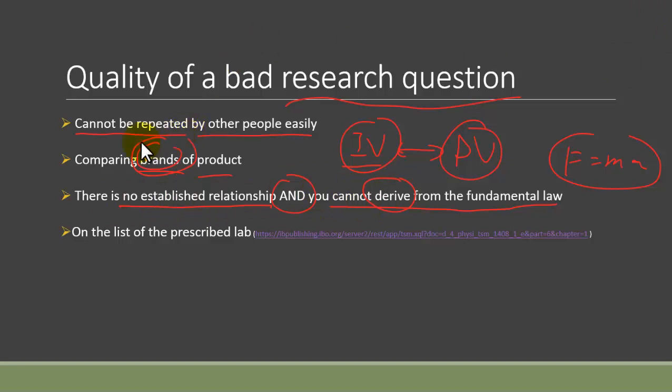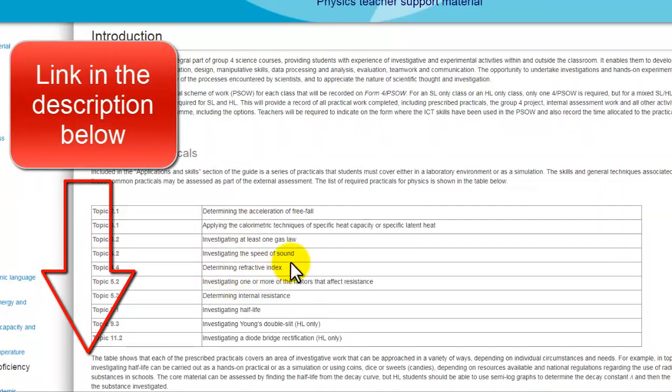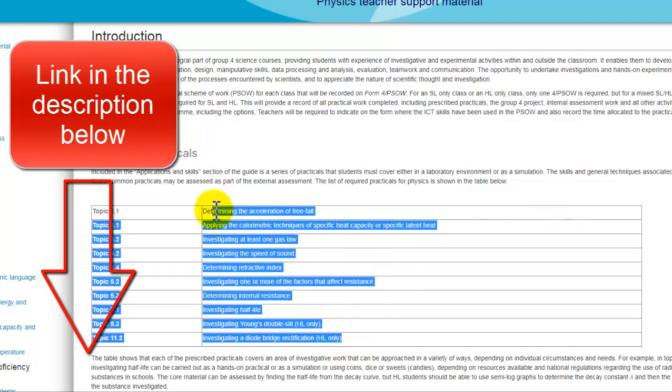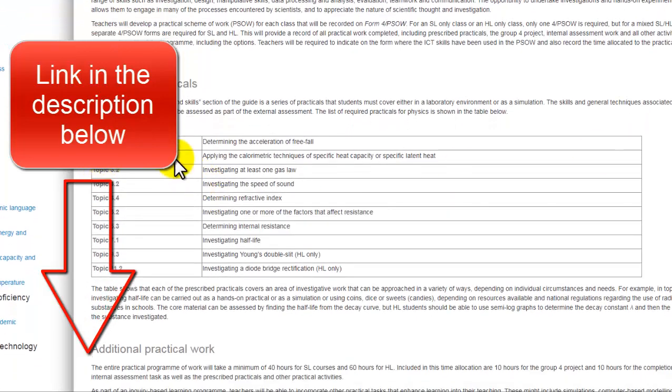Number four, there's actually something called a list of prescribed lab in IB physics which your teacher are expected to cover this experiment with you. These are like the very very basic practical activity that IB kind of assigned to all the teachers that you have to cover and through this experiment you can learn the basic technique for doing experiment.